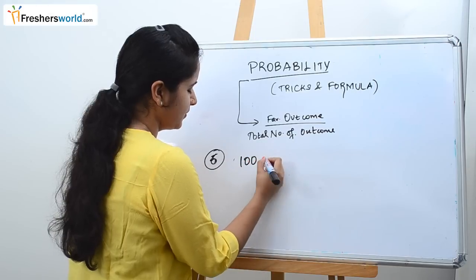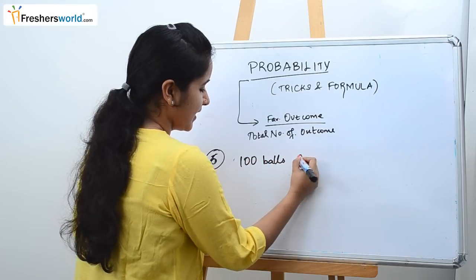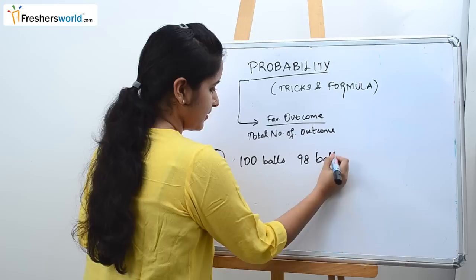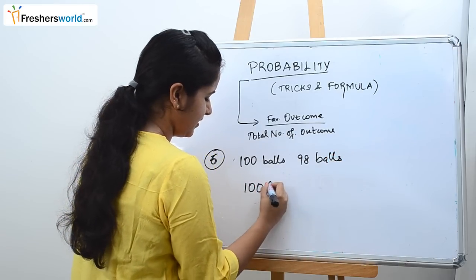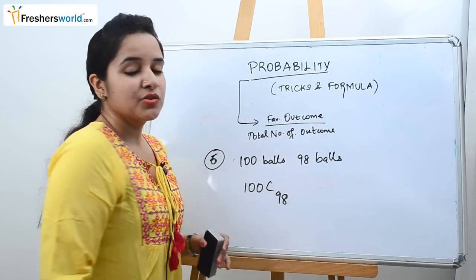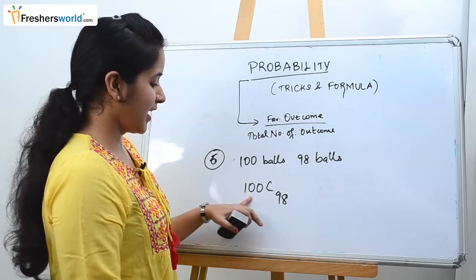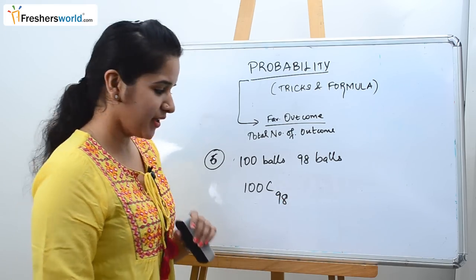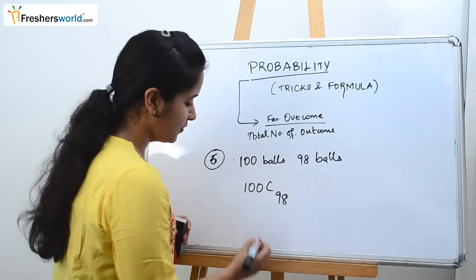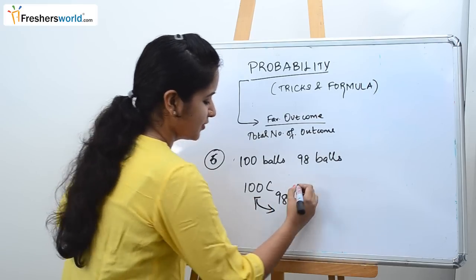Let's say out of 100 balls you need to choose 98 balls. So it will be 100C98. So it is not possible to reduce 98 times. So here comes the trick.